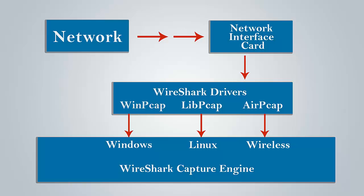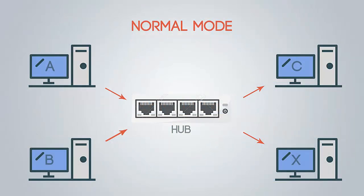There are three types of modes in Wireshark for understanding network capturing. The first mode is normal mode. In normal mode, all PCs are connected to a hub. When PC A sends traffic to PC C, the remaining PCs receive the message, but PC X and PC B drop the packet because they have no listener interface.